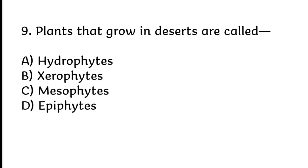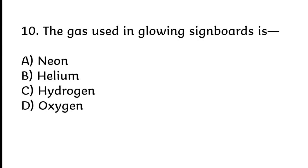Plants that grow in deserts are called xerophytes. Correct answer is B, xerophytes. The gas used in glowing sign boards is neon. Correct answer is A, neon.